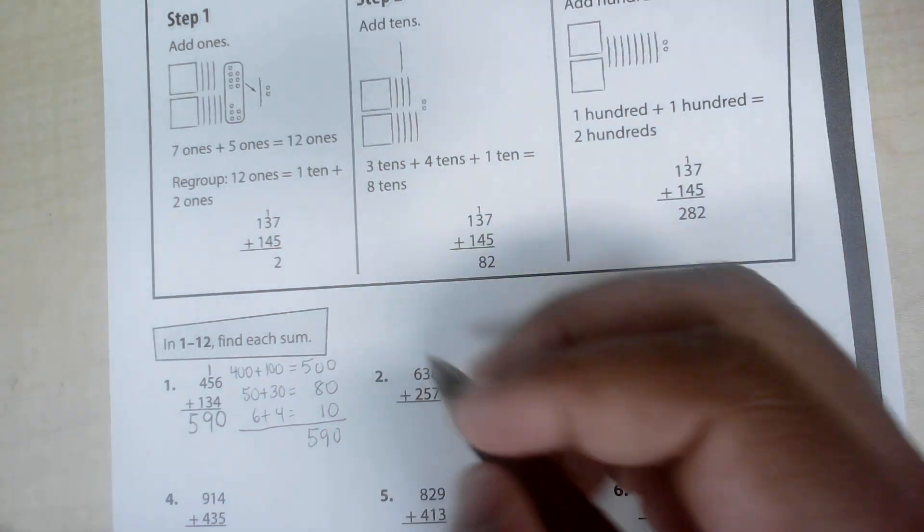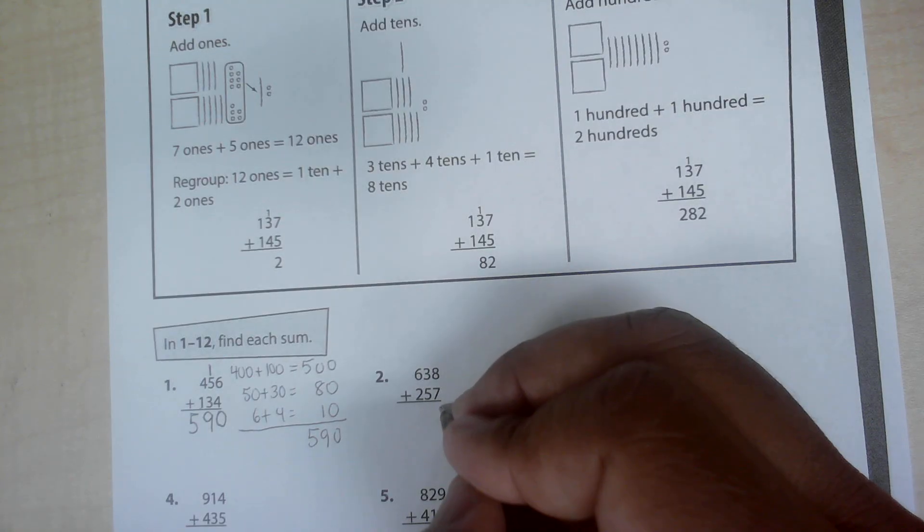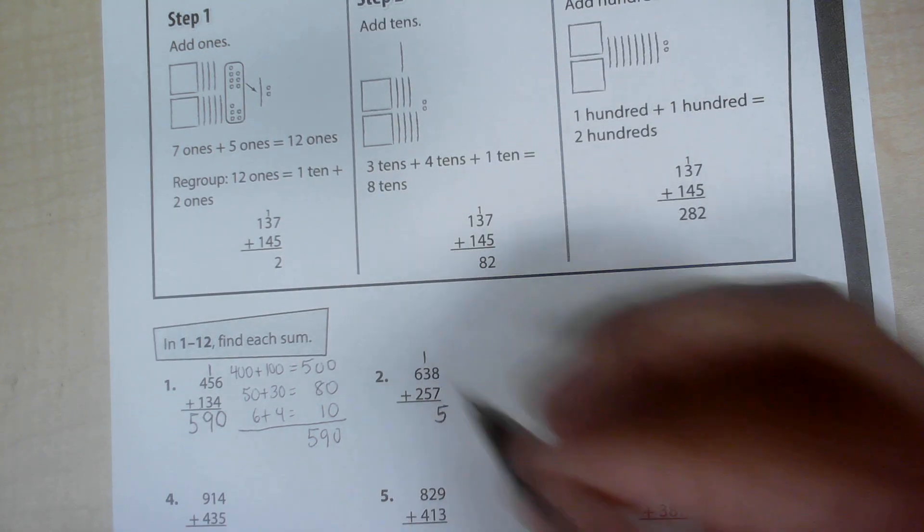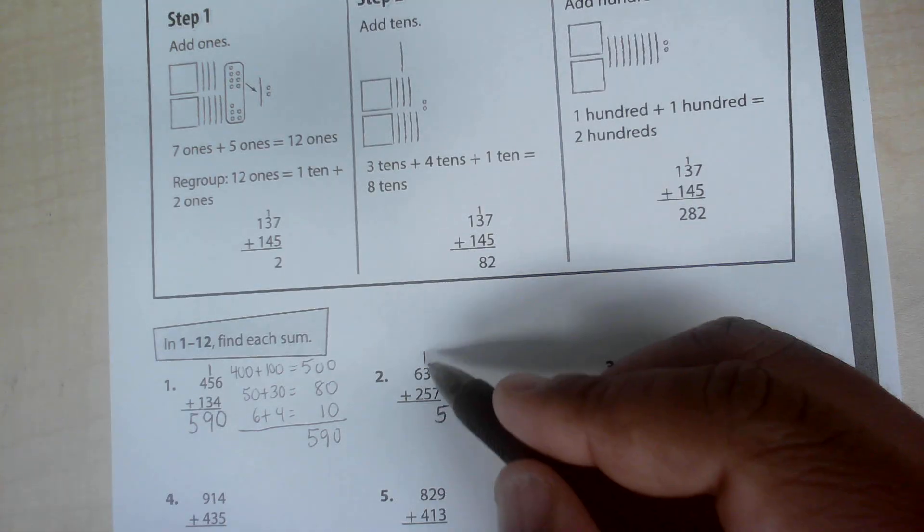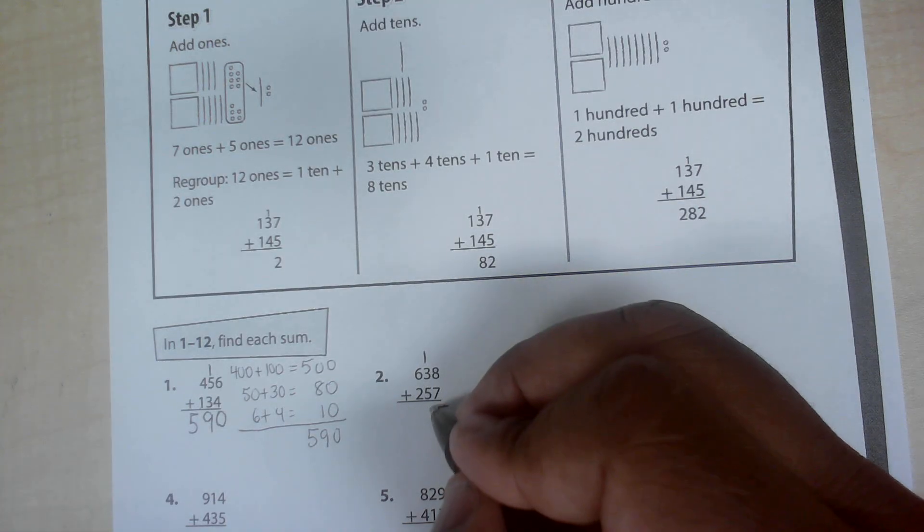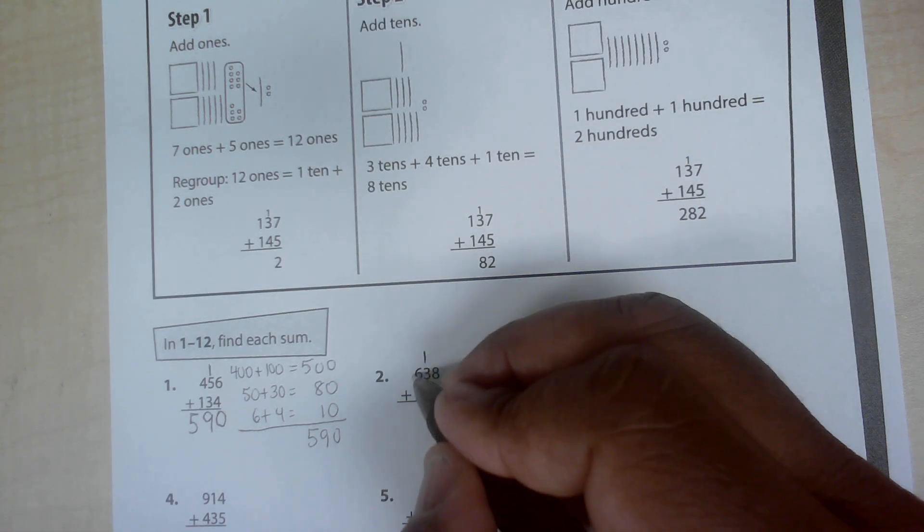I will try one more time with number two. Eight plus seven is 15. You have five ones and one 10. So you regroup the tens. One plus three plus five is nine. And then six plus two is eight.